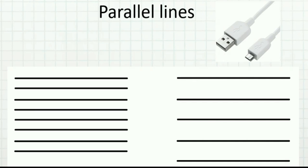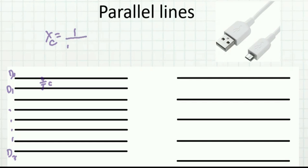Let's understand what happens when parallel lines are doing high-speed communication. Suppose we have D0, D1, through D7 — 8-bit parallel data. Whenever I have these wires close together, there will be capacitance between them — two conductors separated by insulation. Capacitive reactance Xc equals 1 divided by 2πfC. As frequency increases, Xc reduces and acts like a short circuit. Instead of data going straight on D1, it will interfere with D0 and D2 — data gets corrupted. This is the problem with high frequency.